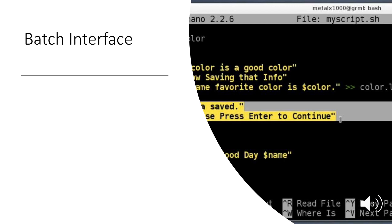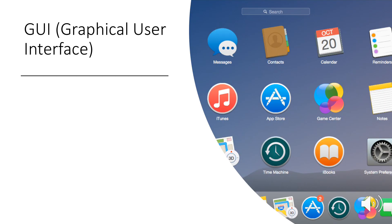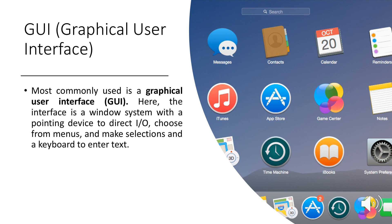Batch interface: commands are entered into files and those files are executed, like shell scripting. GUI (graphical user interface): the most commonly used interface, where the interface is a window with a pointing device to direct I/O, choose from menus and make selections, and a keyboard to enter text.